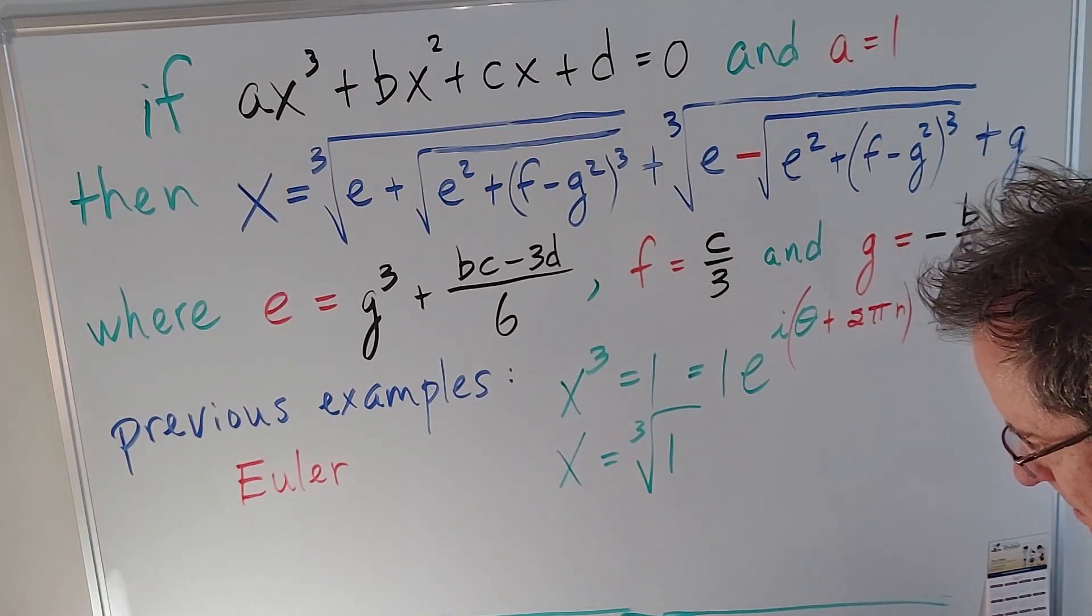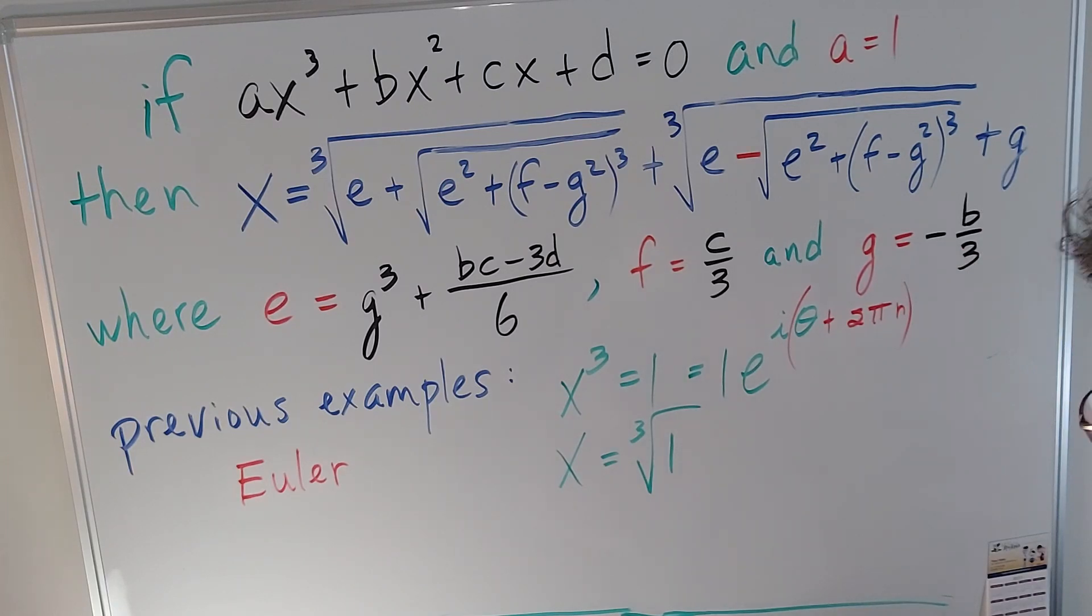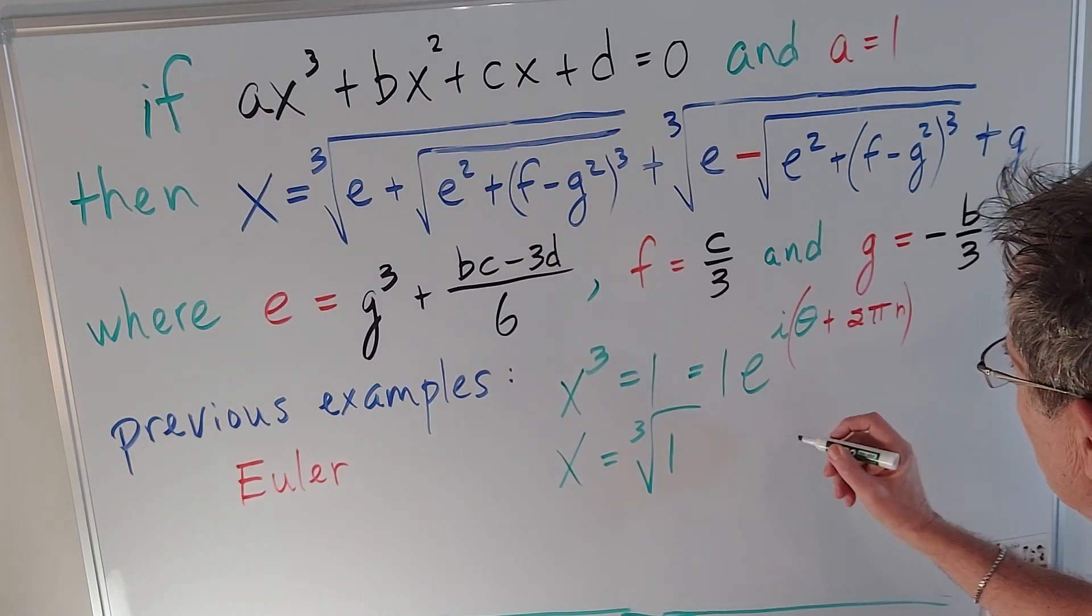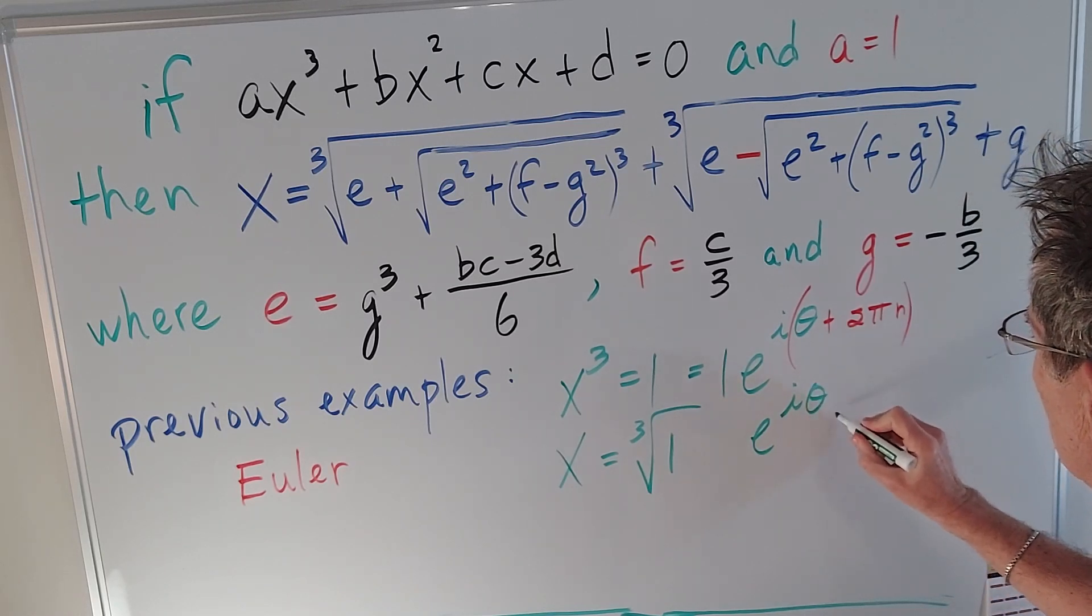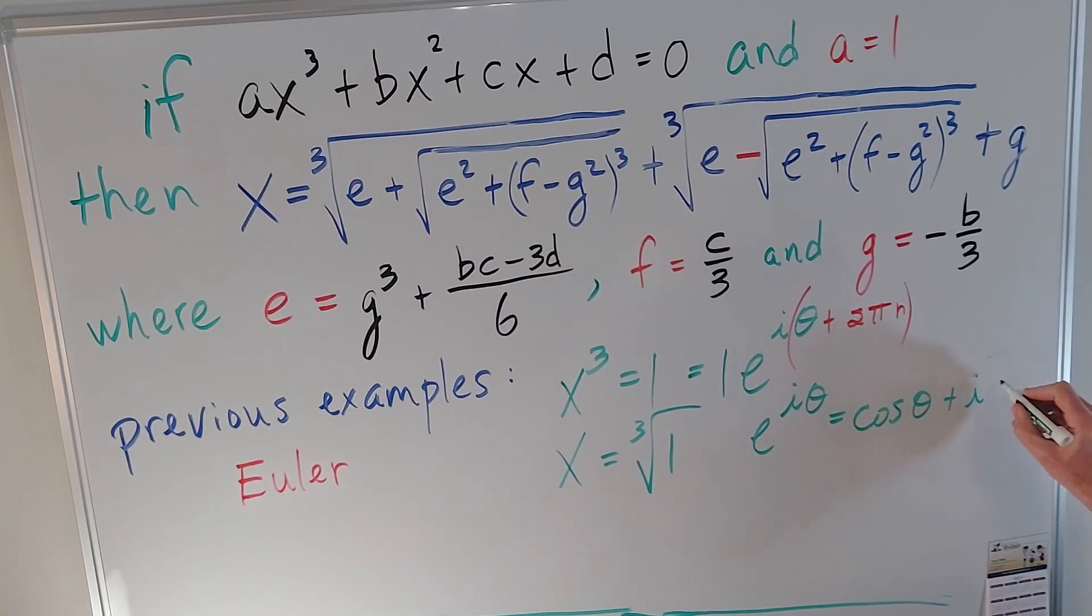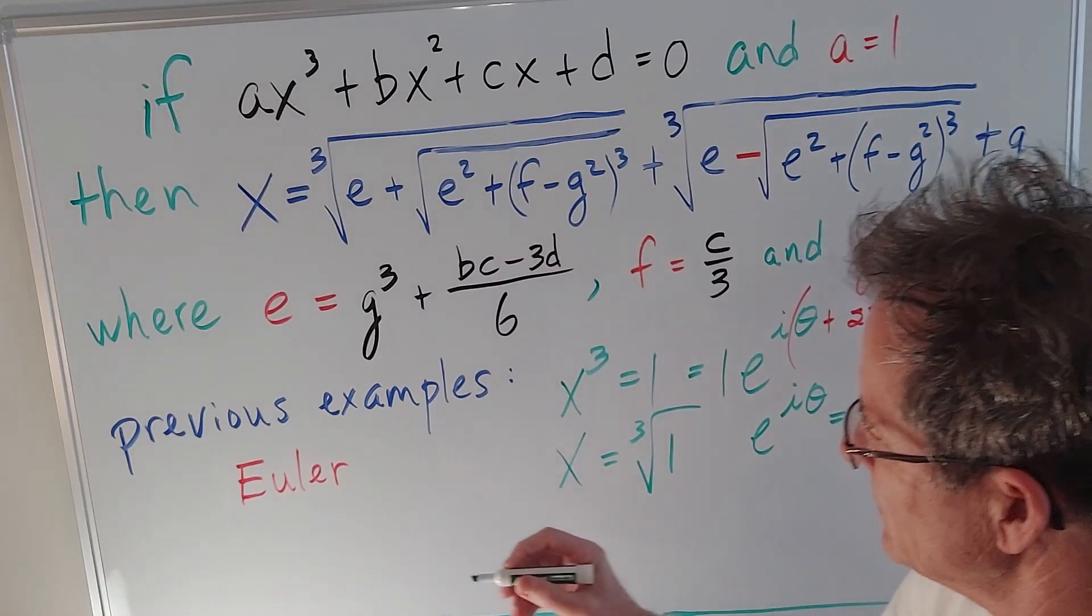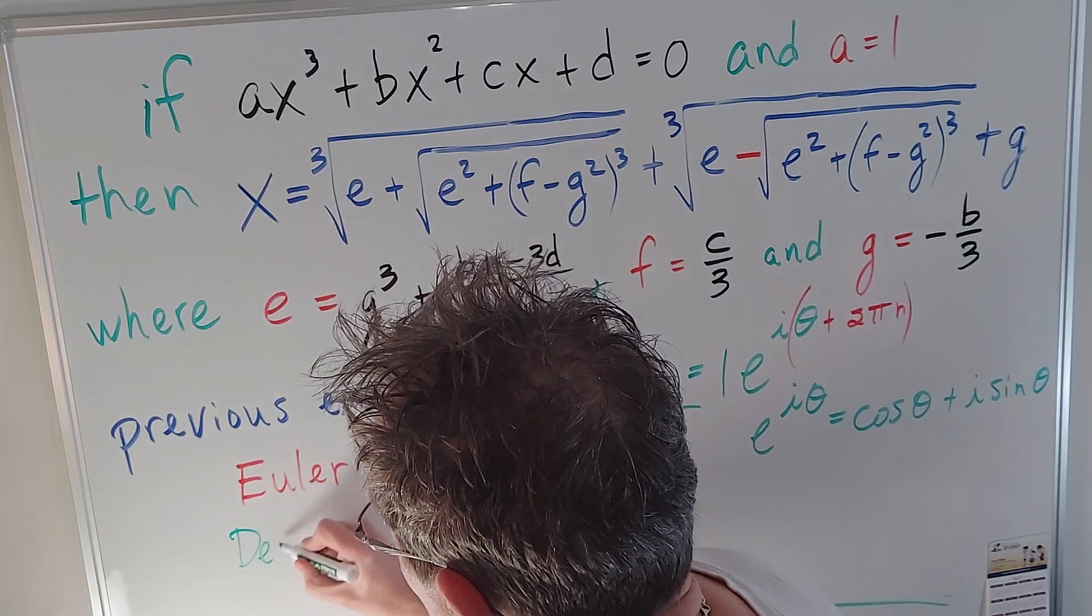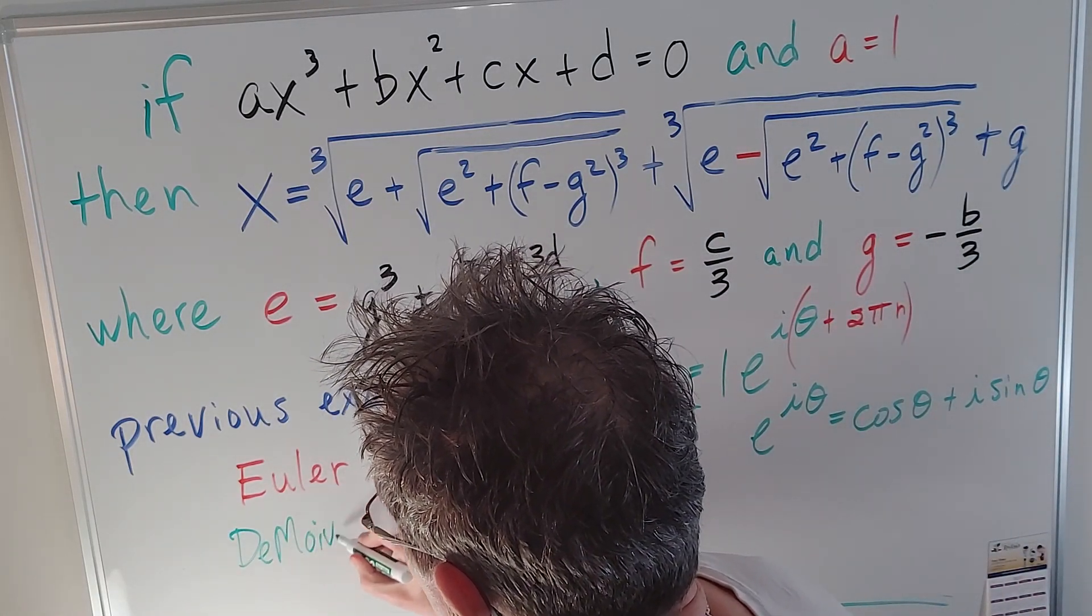Now let me just explain what e^(iθ) means. e^(iθ) can be written as cos(θ) + i·sin(θ). That's de Moivre's theorem. I'll write that over here as well. Or a formula I should say.